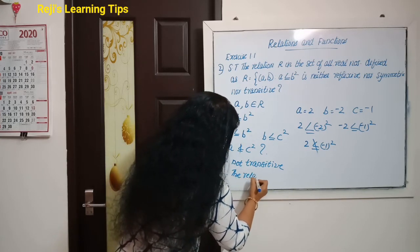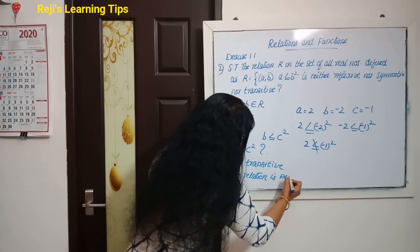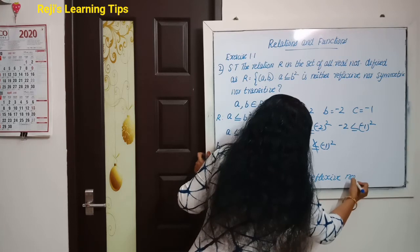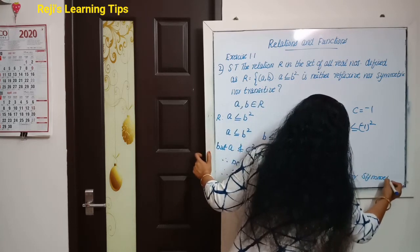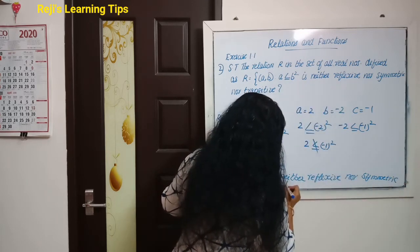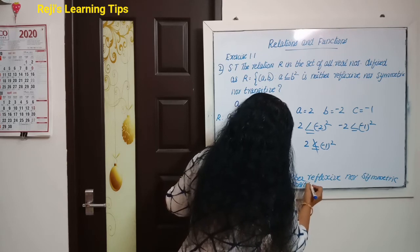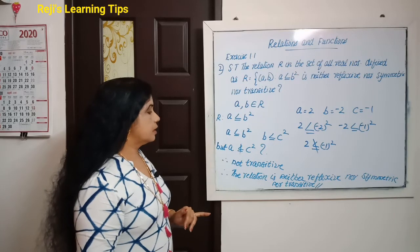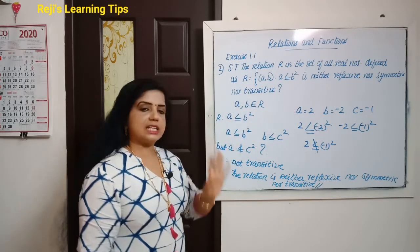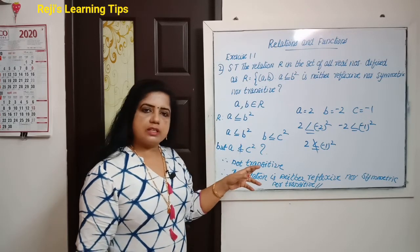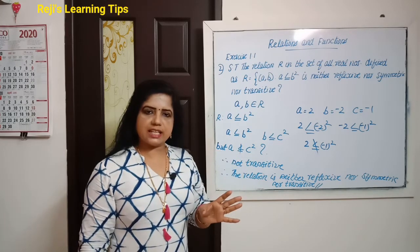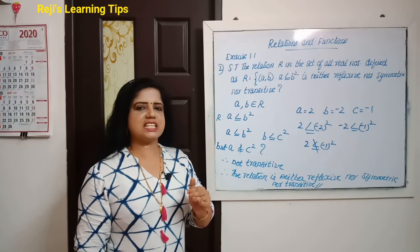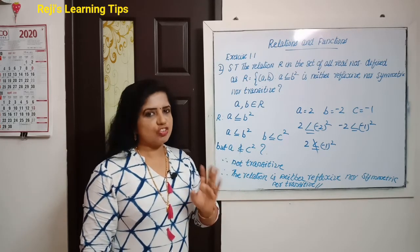Therefore, the relation R is neither reflexive, nor symmetric, nor transitive. This is what we had to prove. If you have any doubts, please mention them in the comment box and we will address them in the next class. See you again, bye bye.